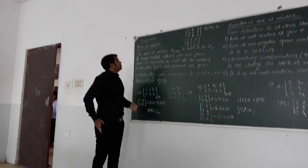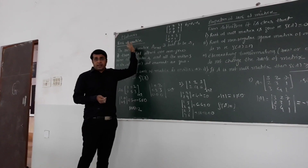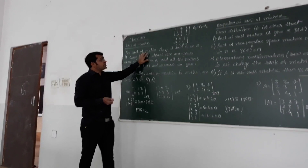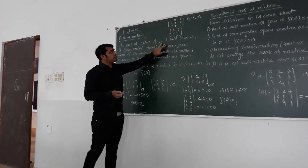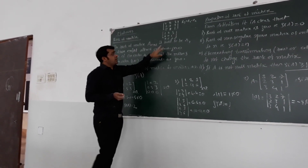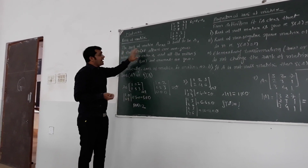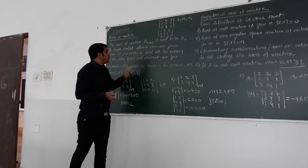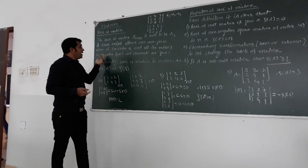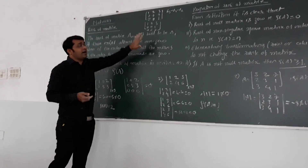We are seeing the topic here — it is matrices, under that rank of matrix. It is a very important topic. We are defining the rank of matrix here: a matrix A having the order m cross n, where m denotes the number of rows and n denotes the number of columns, is said to have rank r if there exists at least one non-zero minor of order r and all minors of order r plus 1 and onwards are 0.